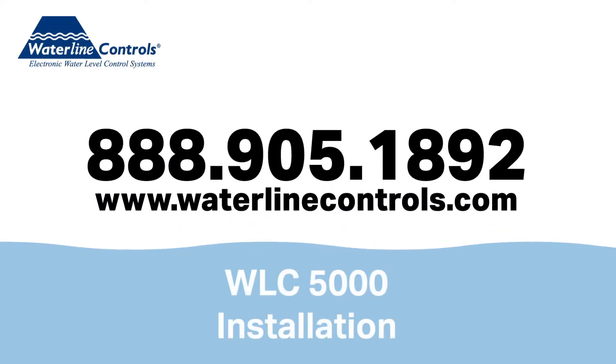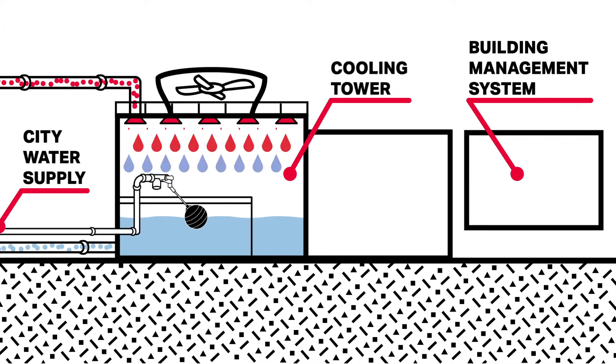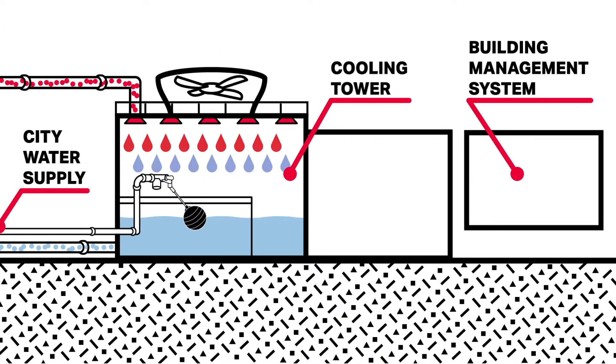The WLC-5000 provides a long-term solution for precise water level control in any environment. This installation guide will demonstrate how it could permanently replace a faulty float assembly or any other electronic level control. This typical water system should look similar to what exists in your application.